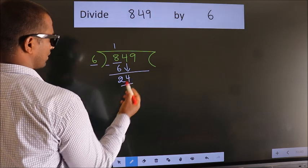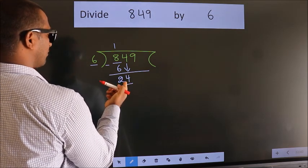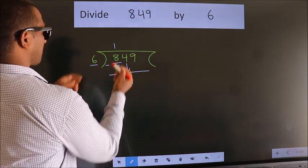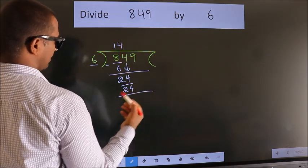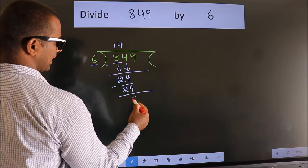So 24. When do we get 24 in the 6 table? 6 times 4 equals 24. Now we subtract. We get 0.